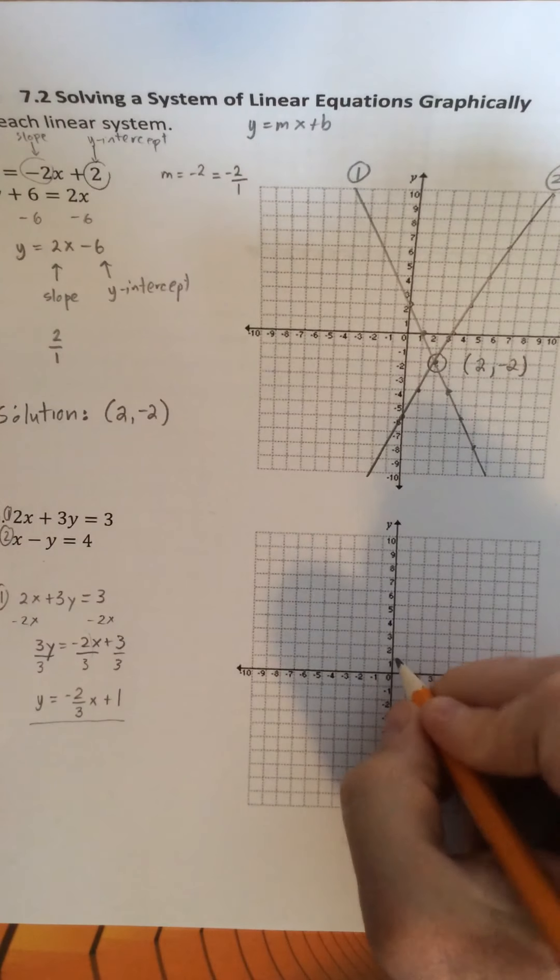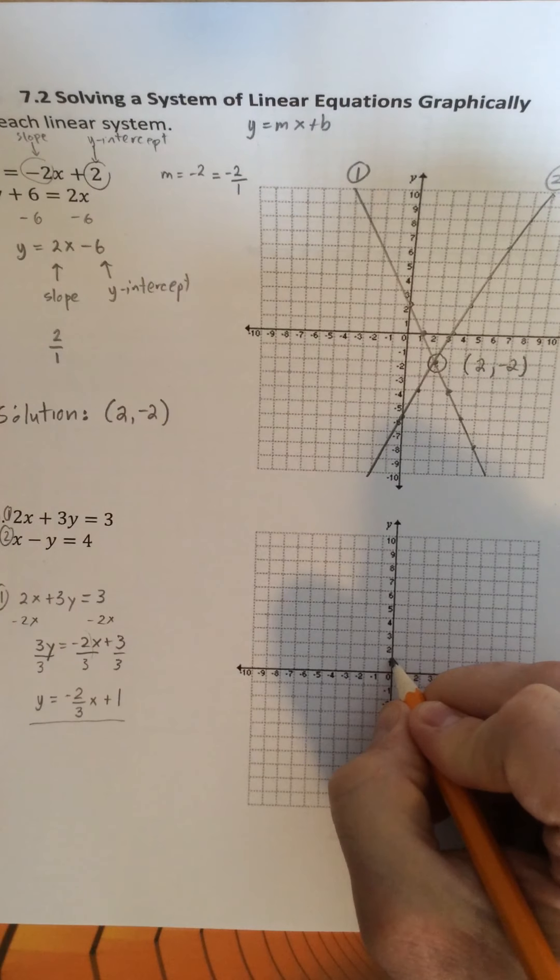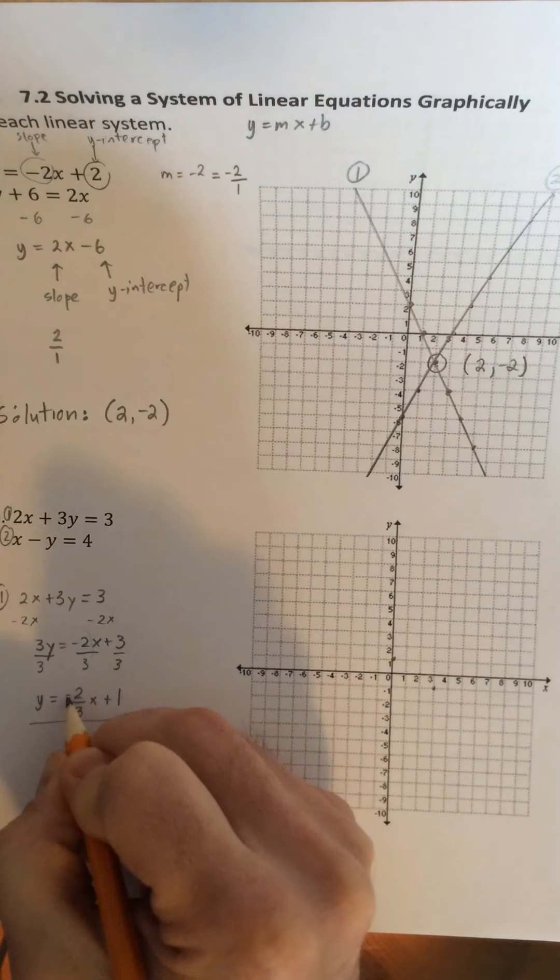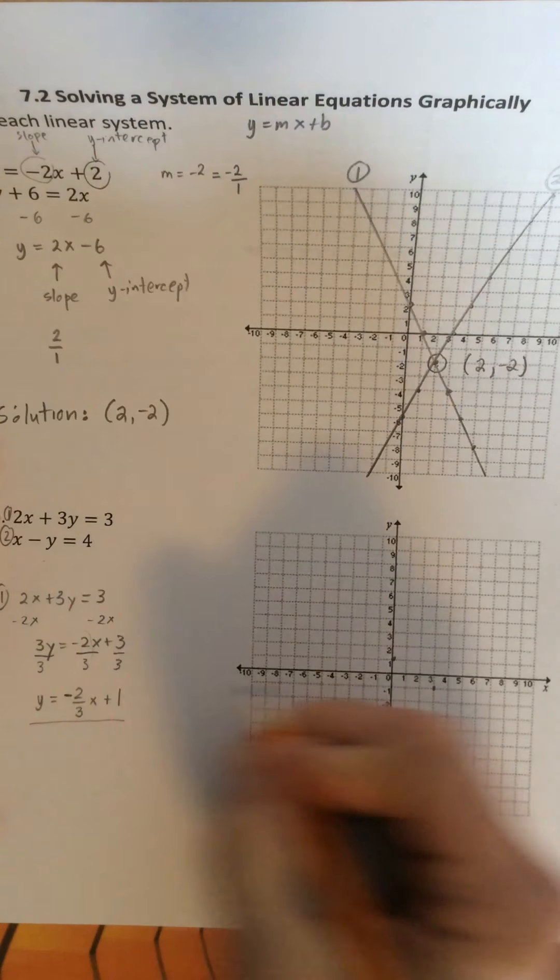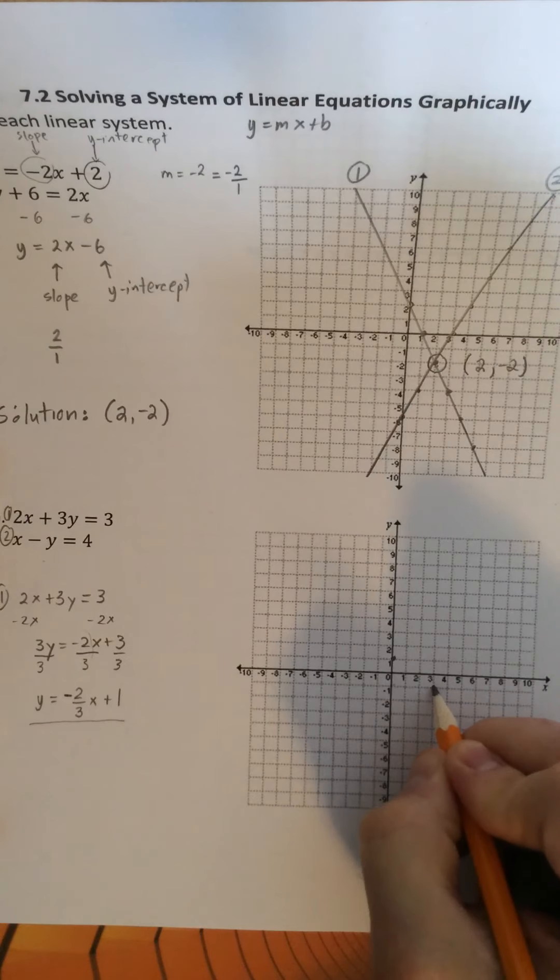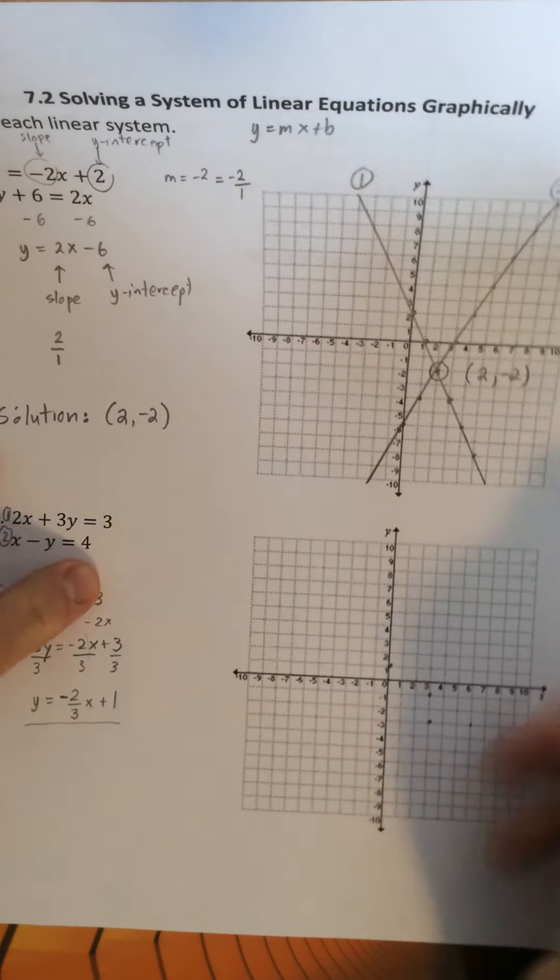So if I graph this, I'm going to start at 1 along the y-axis. And then the slope is going to go down 2 and to the right 3. Again, I'm just making the numerator negative when I graph this slope. So down 2 to the right 3. Down 2 again to the right 3.